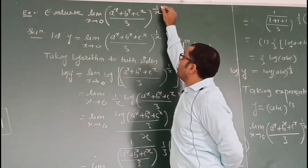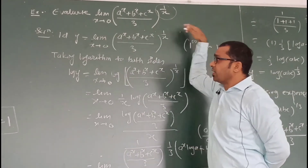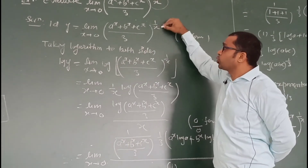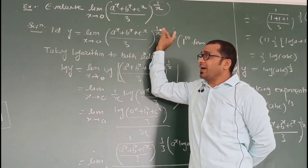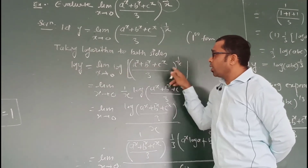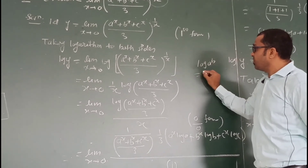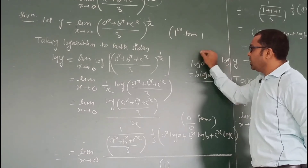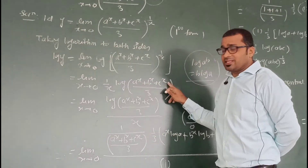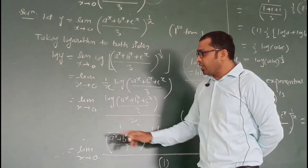Whenever we have a limit with something to the power of some function, we take y equals to the given limit function, then take the logarithm of both sides. This is because the power quantity can be brought down as a multiplication. So taking log of both sides gives log y equals log of this quantity. Applying the logarithmic property — log of a to the power b is b·log a — the 1/x comes down as a multiplier, giving log of the numerator in the numerator and x in the denominator. Now putting x equals 0.